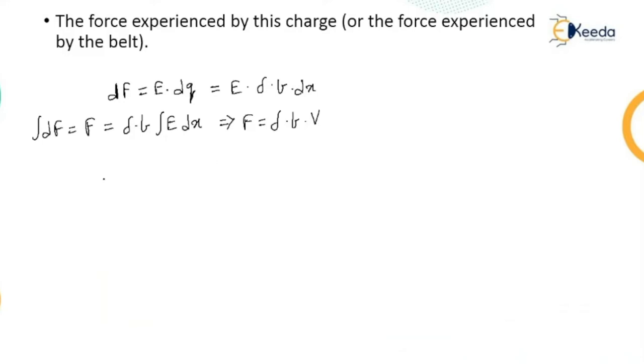The power required to move the belt is equal to force multiplied by velocity. Force is F, velocity is small v. The value of F is sigma B into V multiplied by v, where small v stands for velocity and capital V stands for the voltage.